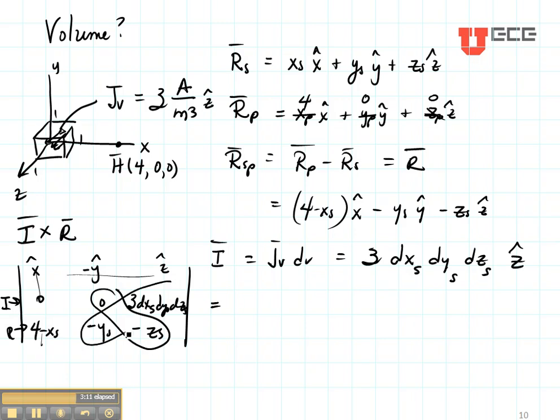minus this value, which is going to give me plus YS times 3, DXS, DYS, DZS, and that's going to be in the X direction.